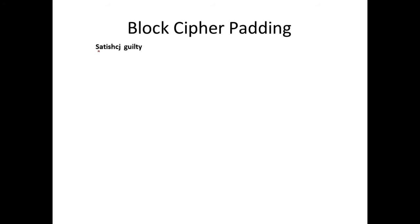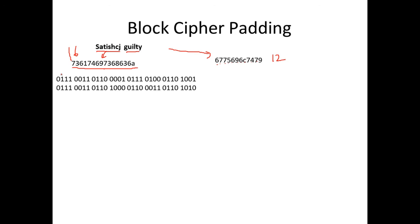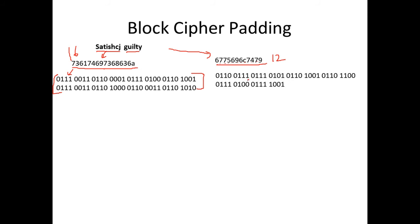Now let's look at block cipher padding. Consider a shorter message: 'Satish CJ is guilty' becomes just 'Satish CJ guilty.' When converting to hexadecimal, 'Satish CJ' gives 16 hexadecimal characters, but 'guilty' gives only 12 hexadecimal characters. With 12 digits, 12 × 4 = 48 bits — we only get a block size of 48 bits instead of the required 64.